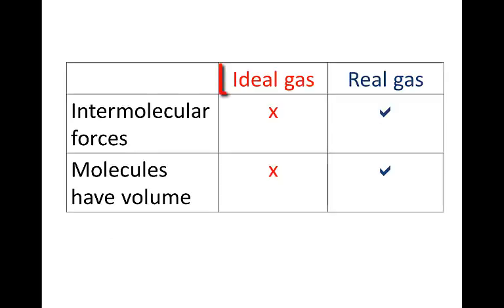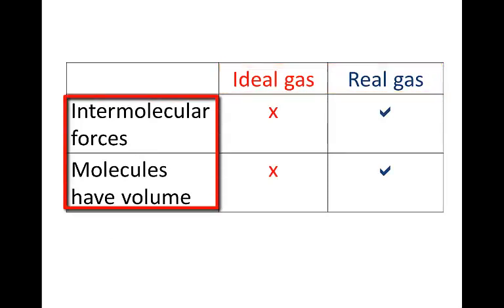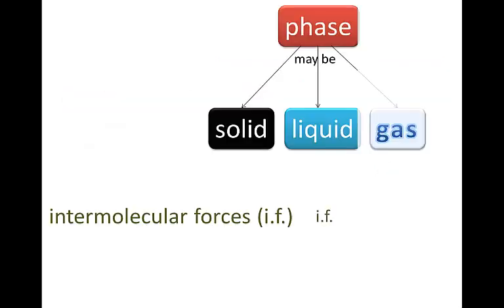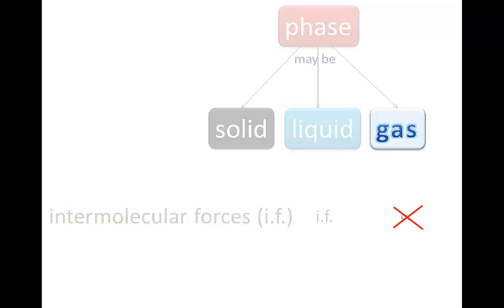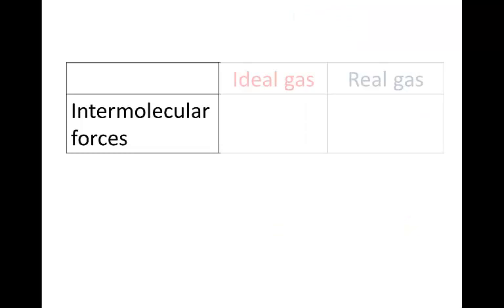The differences between real and ideal gas behavior come down to two main simplifications in kinetic theory. The first is that there are no intermolecular forces between the molecules of a gas. In our simplification, in other words in our ideal gas model, we said there were no intermolecular forces between the particles of a gas.